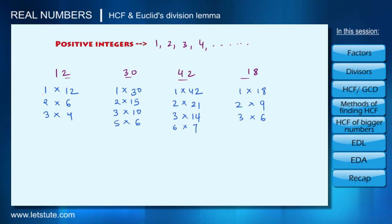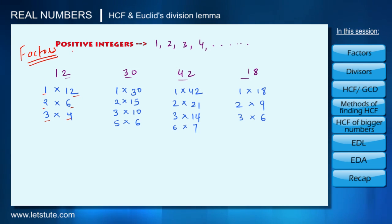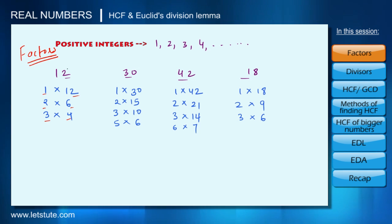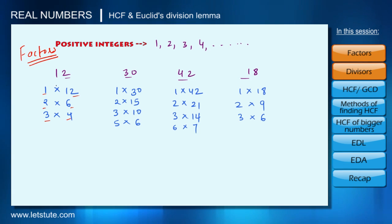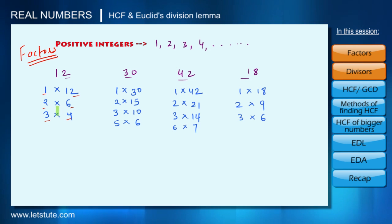The numbers we used to get 12 — that is 1, 2, 3, 4, 6, and 12 — are all called the factors of 12. Note that 1, 2, 3, 4, 6, and 12 also divide 12 completely, so they are also called the divisors of 12. Similarly, this applies to every number.